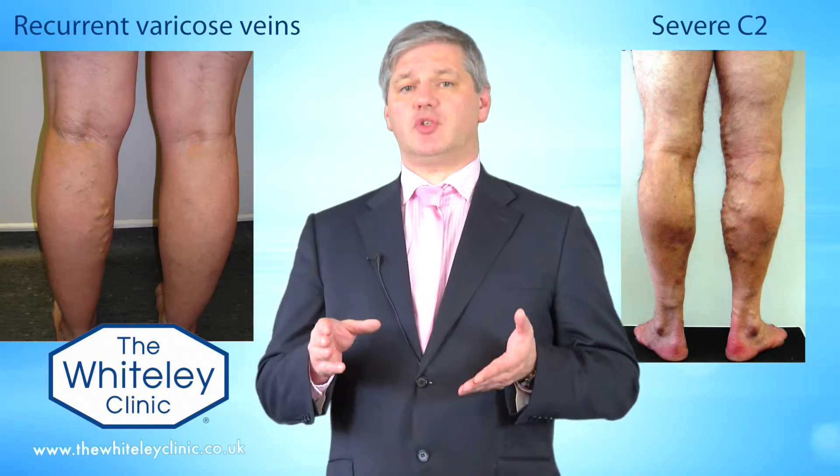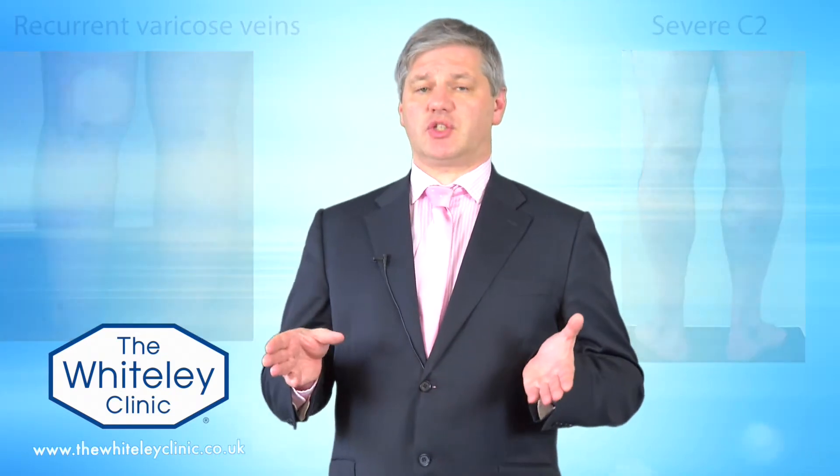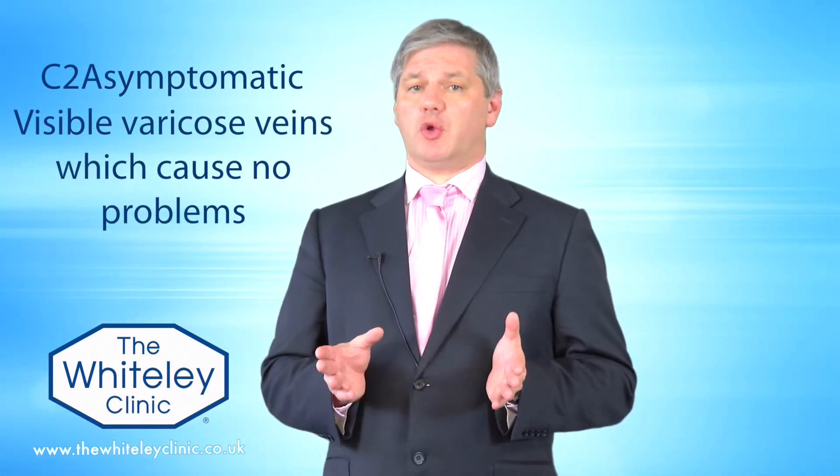C2 is split into two different sections. C2A, which is C2 asymptomatic, is where you have varicose veins that are visible but cause no problems at all — in other words, you don't know you've got them unless you look at them.